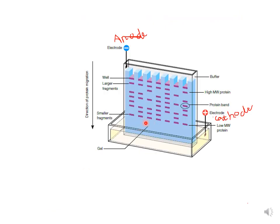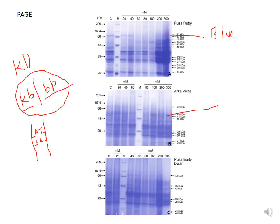Here is another picture showing how proteins are moving in the gel. You can see the different wells — fragments near the well are interpreted as larger fragments, and smaller fragments are at the bottom. High molecular weight proteins are behind the lower molecular weight proteins. This is your vertical gel electrophoresis. Here you can see three protein gels stained blue with Coomassie brilliant blue.